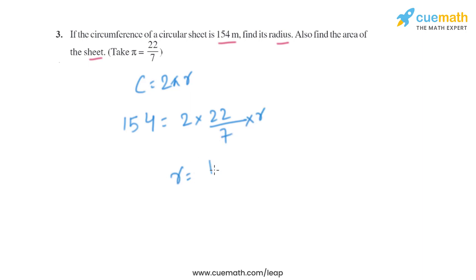So from here we will get the value of r, that is 154 multiplied by 7, divided by 2 × 22. And after solving this, we will get the value of radius, that is 24.5 meters. So that will be the radius of the circle.